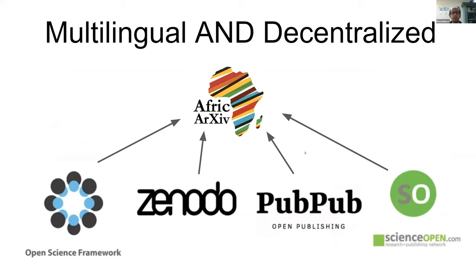I'd like to draw attention to AfricArXiv specifically because what they're doing is really interesting. It has almost transcended being a standard preprint server, functioning more as a meta-preprint server that aggregates scholarship produced by African scholars or about Africa. It is both multilingual and decentralized, pulling from OSF Preprints, Zenodo, PubPub, and Science Open — a really fascinating and ambitious initiative.